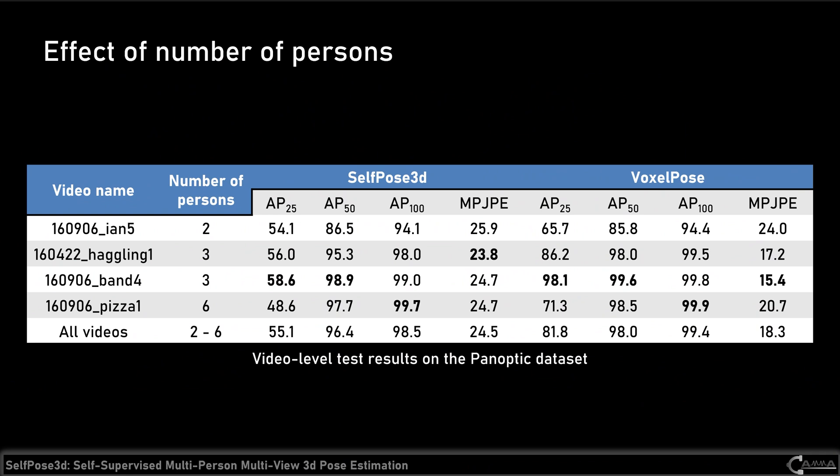Lastly, we show the effect of the number of persons. We perform video-level test results on the Panoptic dataset, as each video contains a different number of persons. As shown in the table, there is no strong correlation between the performance and the number of persons. On the other hand, occlusion is still the key factor — the first video, EN5, features a boy playing with a woman, but he is heavily occluded due to his height, leading to poorer performance.